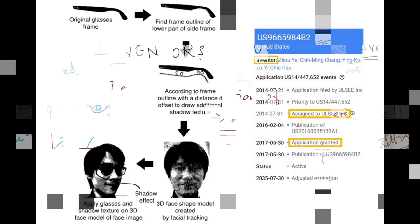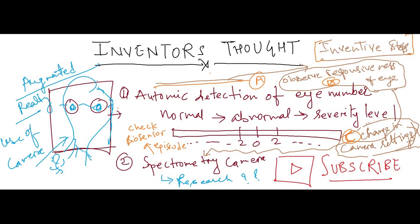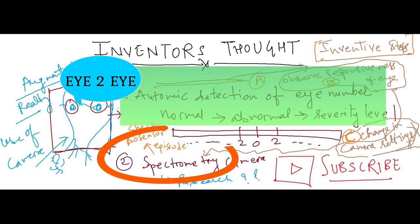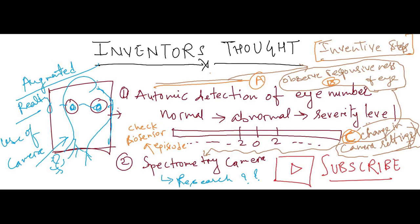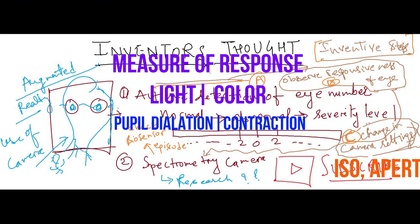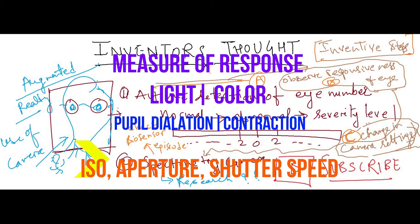It's invention time. For the augmented reality use case, we can add on detecting the eye number. This requires some specific configuration for the glass. The inventive steps require response of the eye with light and color. Types of camera and camera settings could also help.